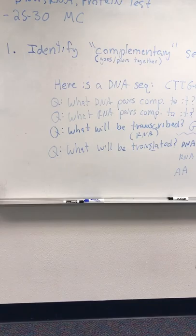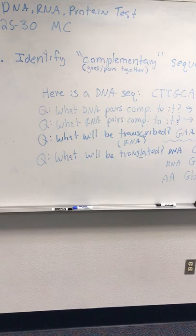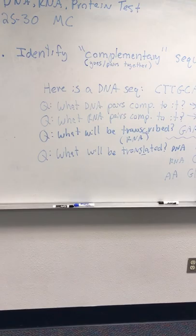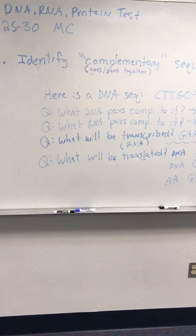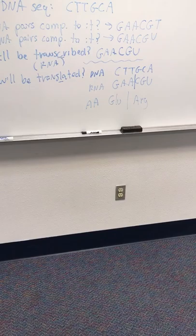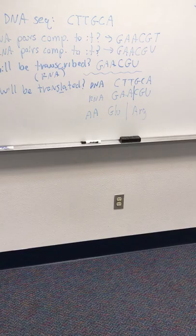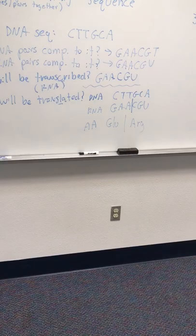The hardest question asks what will be translated. If given DNA, you need to go all the way to protein: DNA to RNA to amino acid. They may give you DNA on the test and ask what protein it makes. Remember, DNA cannot go directly into the amino acid chart. First, convert DNA to RNA: C with G, T to A, T to A, G to C, C to G, A to U.